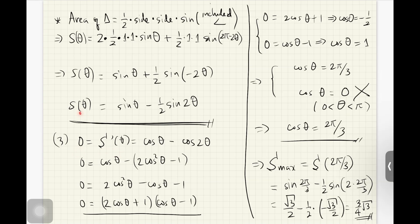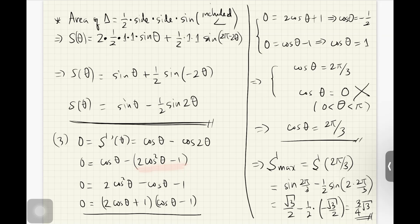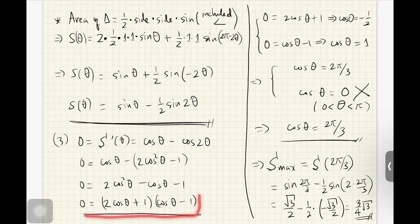Setting the derivative equal to zero: 0 = cos(theta) − cos(2theta). We use a trig identity to expand cos(2theta) as 2cos²(theta) − 1. The reason we do this is so we have like terms — cosine theta and cosine squared theta — allowing us to do algebra. Rearranging and factoring, we get a factored expression that is straightforward to solve.